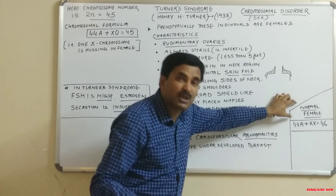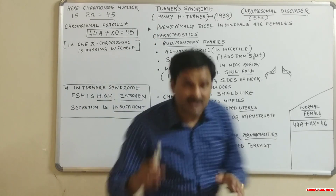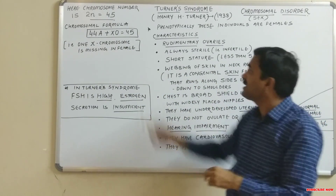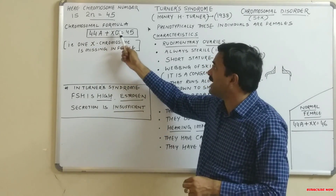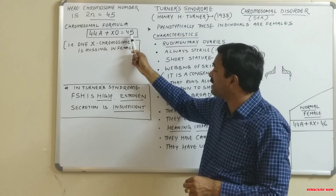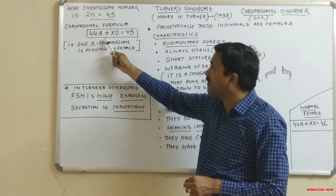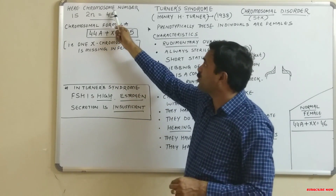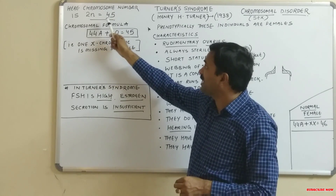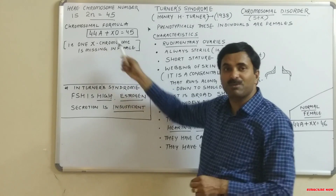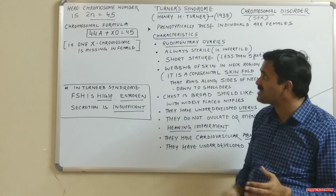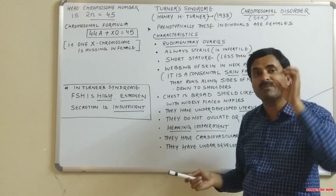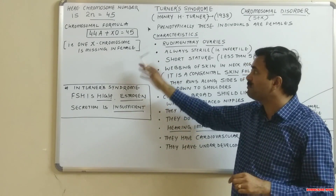In a female suffering from Turner syndrome, the genetic constitution becomes 44A + X0 = 45. This chromosomal formula indicates that one X chromosome is missing, which is why we use the term X0 — one X chromosome is absent.